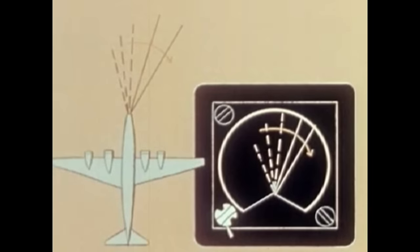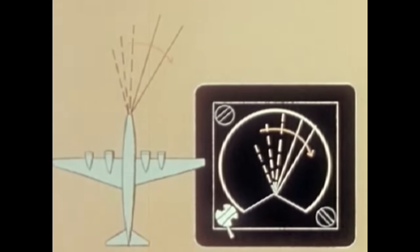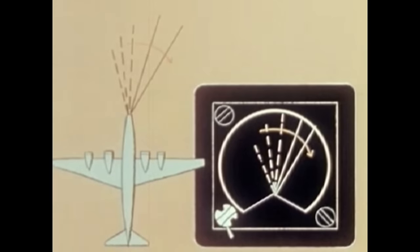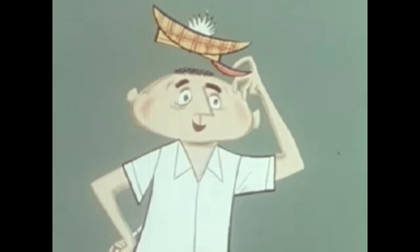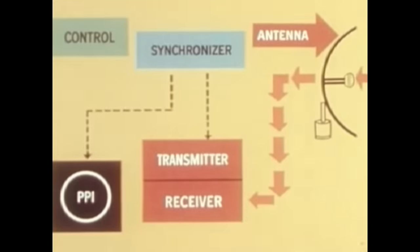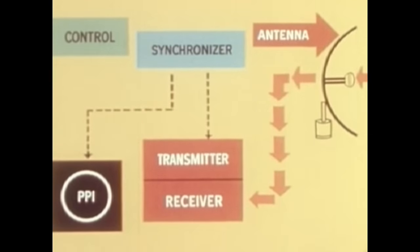The sweep on the picture is coordinated with the antenna so that both beams move together. That dark wedge at the bottom is the shadow cast by the airplane itself. When something appears in the beam, the microwaves are reflected back to the antenna, then to the receiver, and finally to the scope.